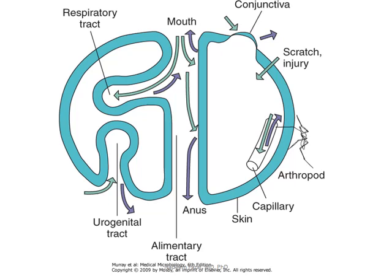The portal of entry is important. For example, Neisseria gonorrhoeae enters via sexual transmission. The same bacteria touching the skin may not adhere there, but it goes and attaches specifically to vaginal epithelium, which then allows it to enter the urogenital tract and cause symptoms.